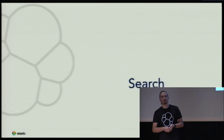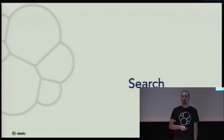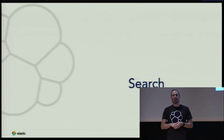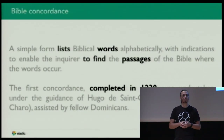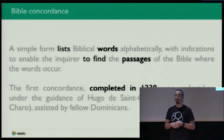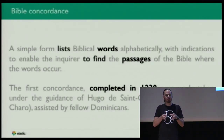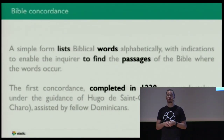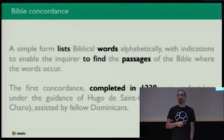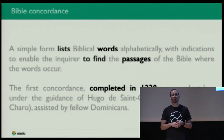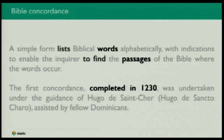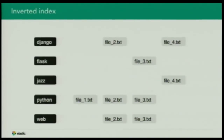We are a search product — an open-source search product. Search is not a new thing; it's been around for a long while. The really down-to-earth basics haven't changed that much since those times. We still use the same data structures — the inverted index — which looks the same in a book as it does in a computer. It is a list of words that actually exist somewhere in our data set, and they are sorted.